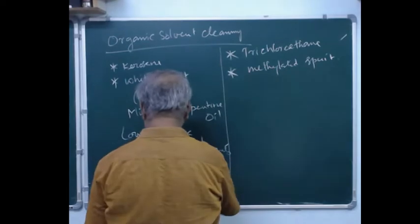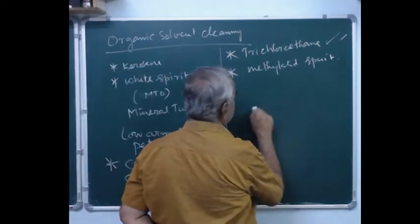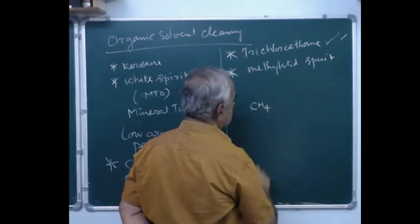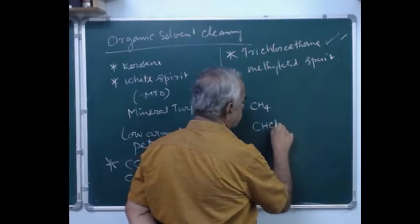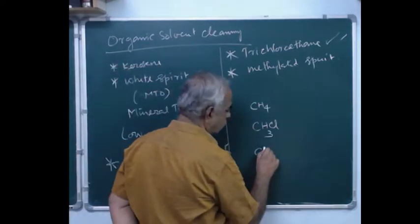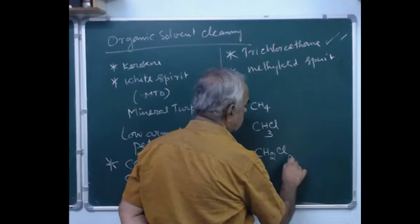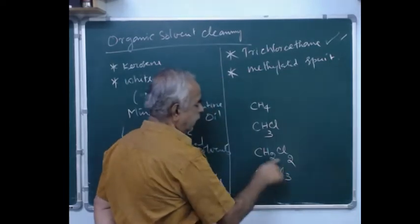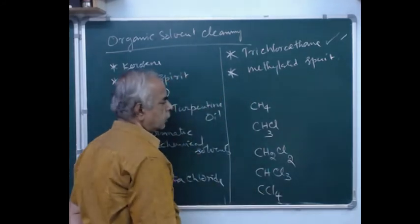Let me give you some idea about carbon tetrachloride and trichloroethane. We know methane — that is CH4 — this is natural gas available from petrochemicals. When one hydrogen is replaced by chlorine, we get CH3Cl, which is called methyl chloride. When two hydrogens are replaced, it is called methylene dichloride (CH2Cl2). When three hydrogens are replaced, we get CHCl3, which is called chloroform. And when all four are replaced, we get CCl4 — carbon tetrachloride.